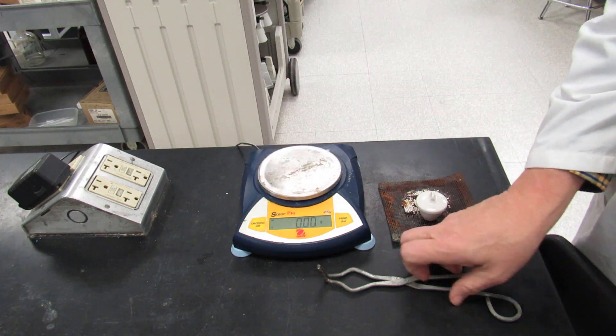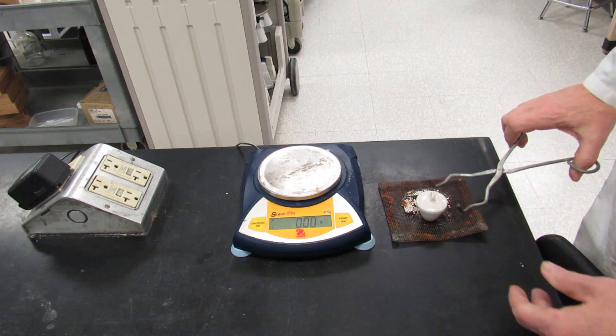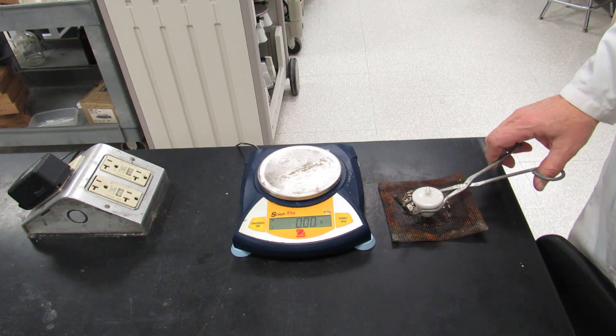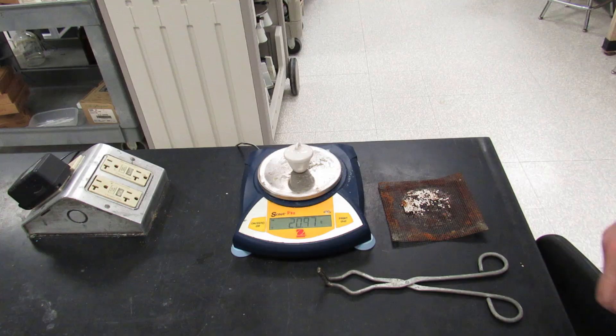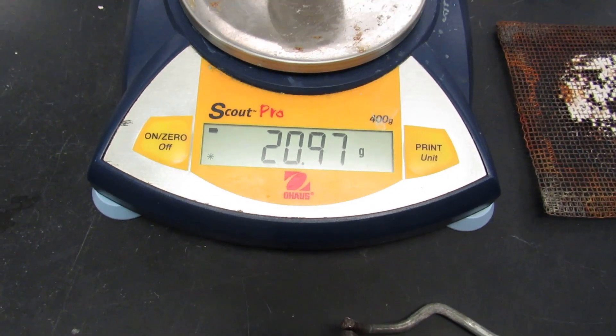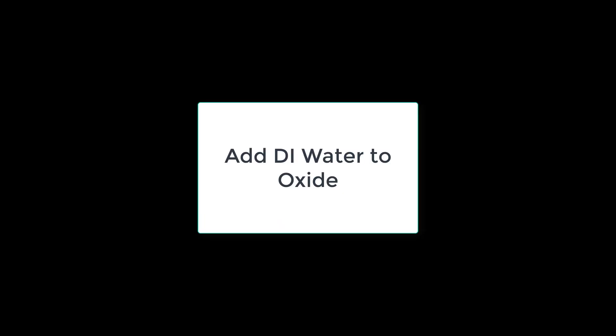Now, you're going to have to mass the magnesium oxide with the crucible and cover. The mass of the crucible cover and magnesium oxide is 20.97 grams.